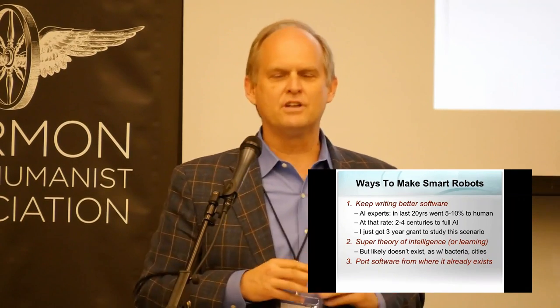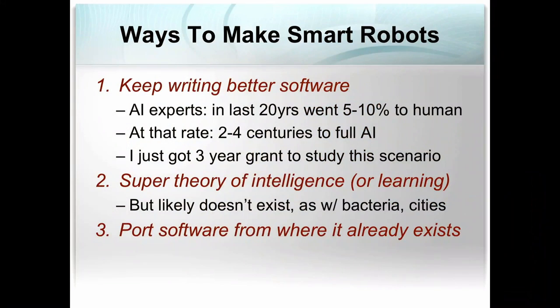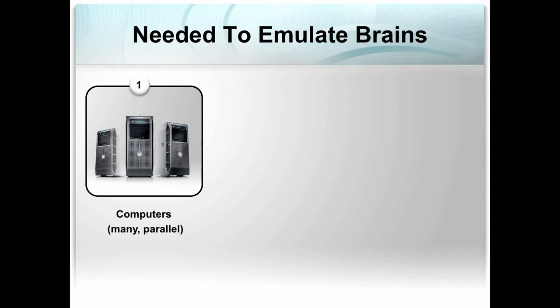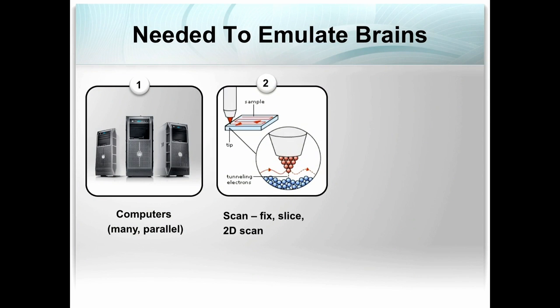I'm going to talk about a third scenario — the idea of porting software. Today if you have old software you like, one approach is to study how it works and rewrite it for a new machine. Another approach is to write an emulator that makes the new computer look like the old one to the software. The idea is to do that for the human brain. We'd need three technologies: lots of cheap fast parallel computers; ways to scan particular human brains in fine spatial and chemical detail; and models of how each kind of brain cell takes signals in, changes internal state, and sends output signals.